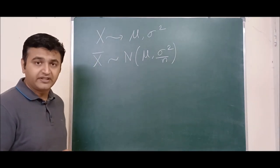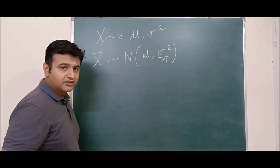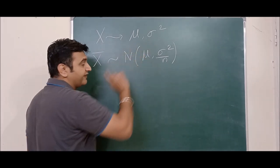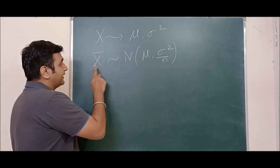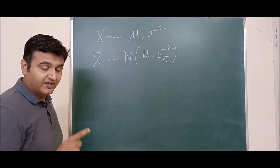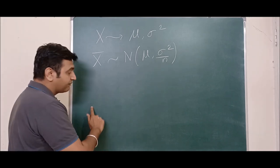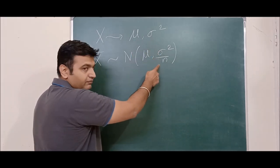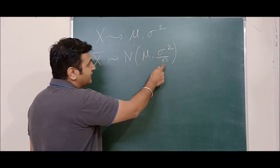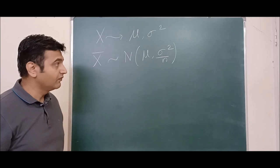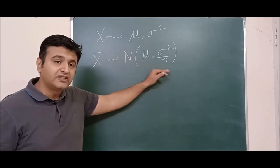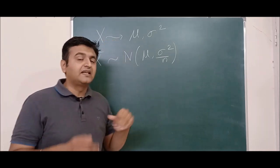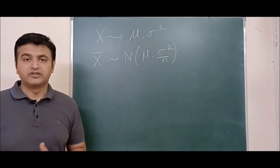Just for the sake of completeness, let us recall the central limit theorem. It says that if x is a random variable for which you do not know the probability distribution, and it has mean mu and variance sigma squared, then your sample mean x̄ — which is a statistic — will always be normally distributed with mean mu and variance sigma squared over n. If x is not normal, we take n to be at least 30 so that x̄ will follow the normal distribution.